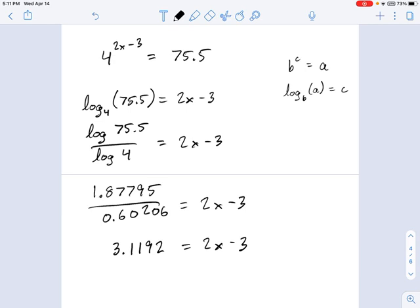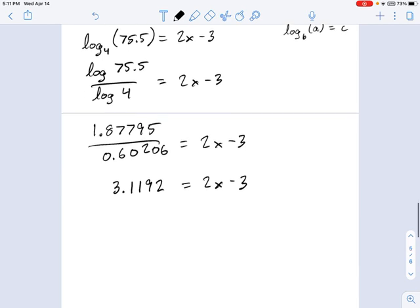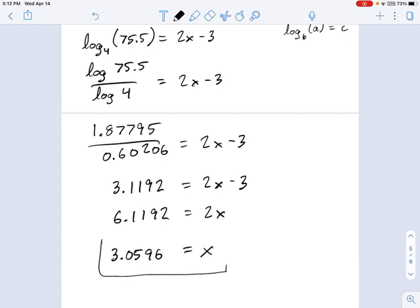So now we can solve this the normal way that we're used to solving equations. We're going to get x by itself. So we say, well, 3.1192 plus 3 is going to be 6.1192 equals 2x. And now we divide each side by 2, and we get x equals 6.1192 divided by 2. It's going to be 3 something. Yep, 3.0596 equals x.